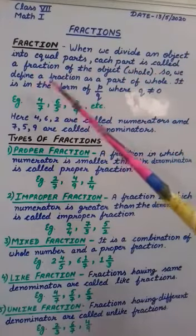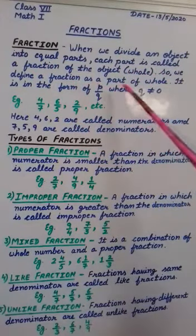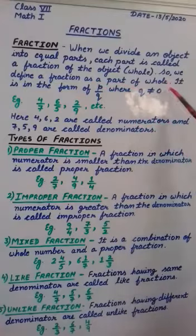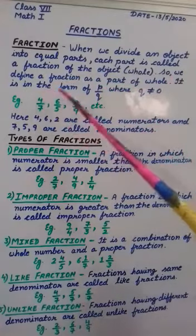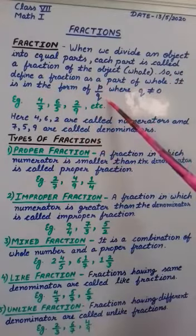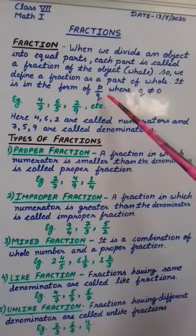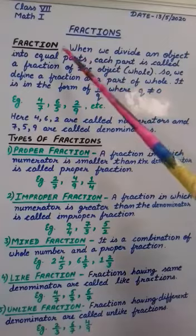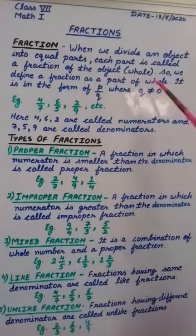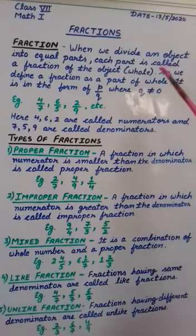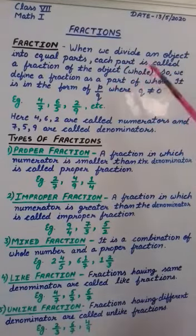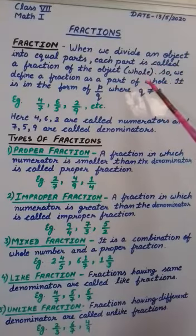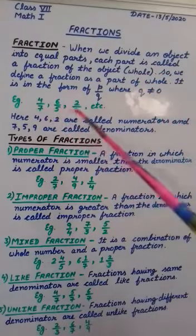We define a fraction as a part of a whole, and it is in the form of P by Q, where Q should not be equal to 0. So what is a fraction? A fraction is a part of a whole. A full object is divided into equal parts and each part is called a fraction.